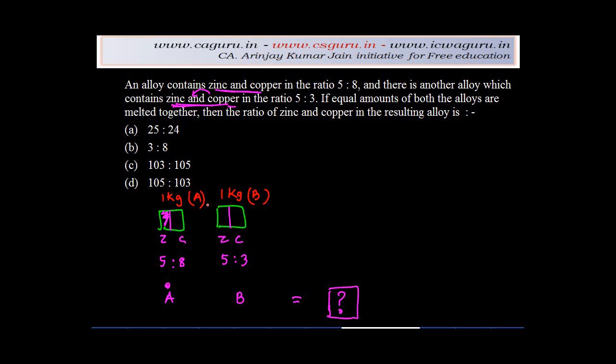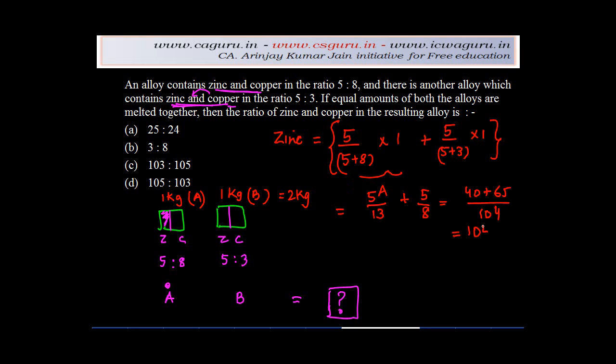So if 1 kg of alloy A is melted and 1 kg of alloy B is melted, then basically how much is the total zinc which is present in the melted alloy which is 2 kg? Zinc in the first one will be 5:8, or in other words 5 divided by 5 plus 8 into 1 kg. For B, how much is zinc? It is 5 divided by 5 plus 3 into 1. The total quantity is 5 plus 8 gives you 13, so 5 upon 13 plus 5 upon 8. The LCM of 13 and 8 will be 104. 8 times 5 is 40 plus 13 times 5 is 65, or 105 upon 104.